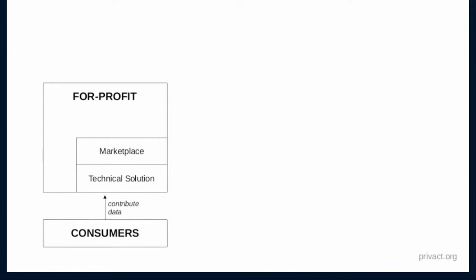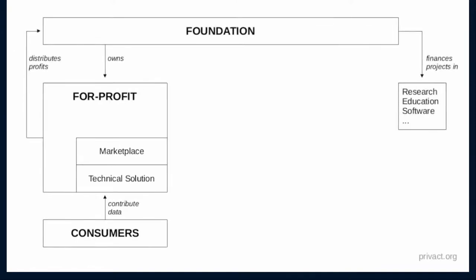If there is a technical solution, we will need somebody who actually runs it. We should create a for-profit company that runs this technical solution and earns money by creating a marketplace of anonymized evaluations based on our data pool. But as we've seen with Freenode, creating a for-profit can be problematic. So what we actually need is something to own this for-profit company — some sort of a foundation with a clear goal that owns the for-profit and spends the money into projects following the foundation's statutes. Foremost, this needs to be research on how to make the technical solution better, because the current situation probably is not sufficient to run such a data pool.